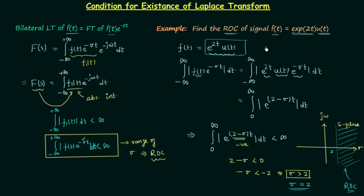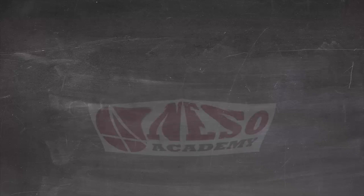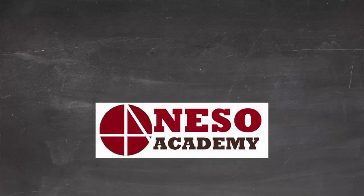This shows we can have a Laplace transform for a wider range of signals compared to the Fourier transform. So this is all for this lecture — we now understand the condition for existence of the Laplace transform and how to obtain the region of convergence using the range of σ.